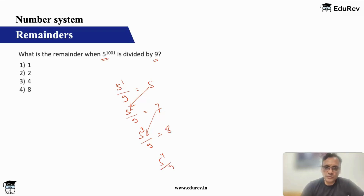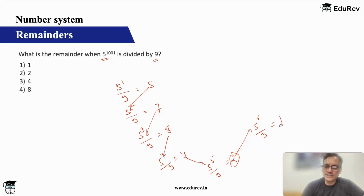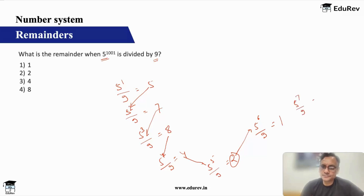For five to the power four: do eight into five, which is 40. 40 divided by nine gives remainder four. For five to the power five: four into five is 20, 20 divided by nine gives remainder two. For five to the power six: two into five is ten, ten divided by nine gives remainder one. And the moment you get one, the pattern will start. You can verify: five to the power seven gives one into five, remainder five — you can see the pattern has started.